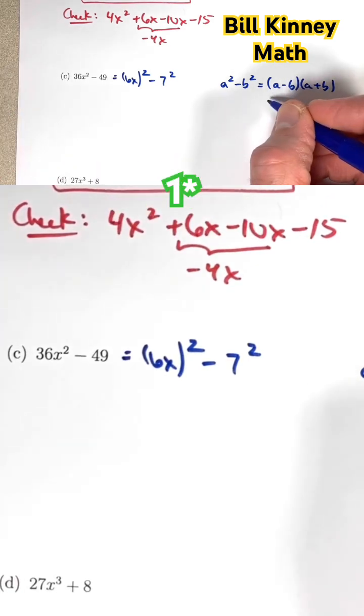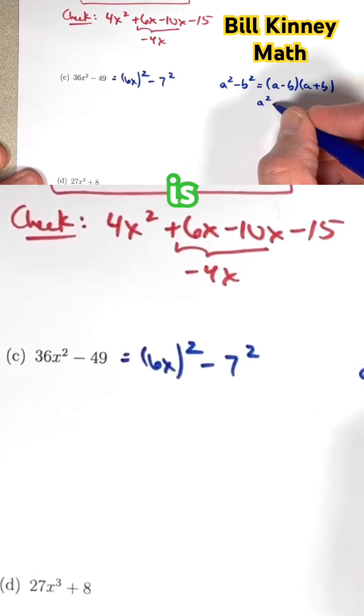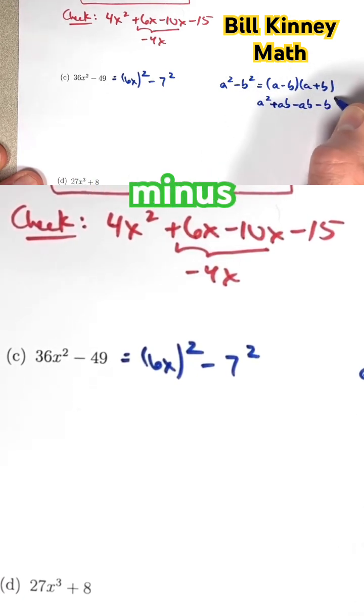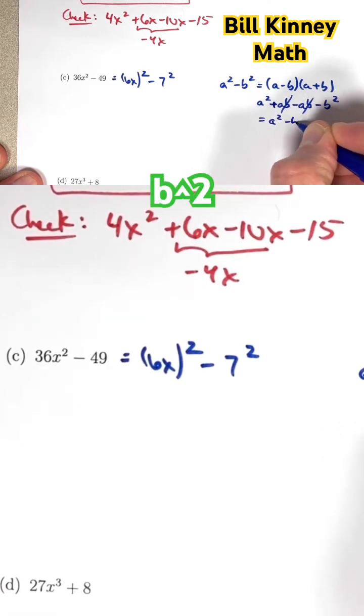first times first is a². Outside times outside is +ab. Inside times inside is -ab. And last times last is -b². Those cancel, simplifying to a² - b².